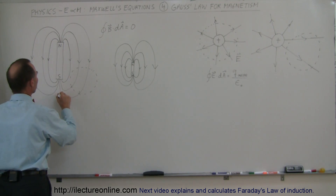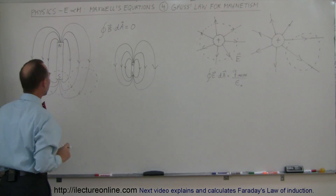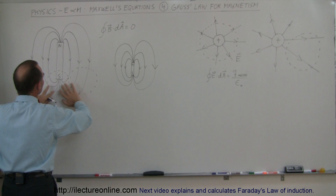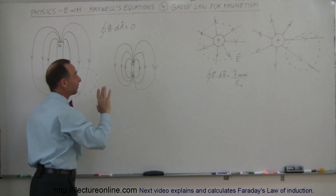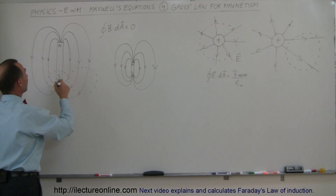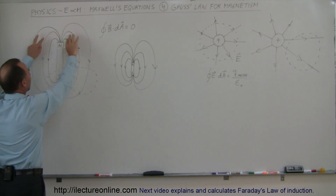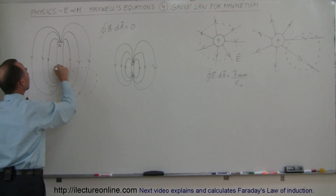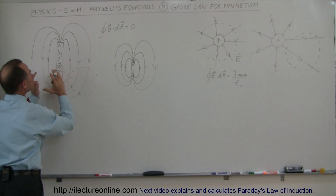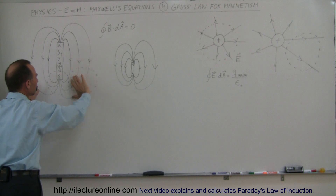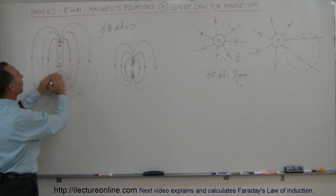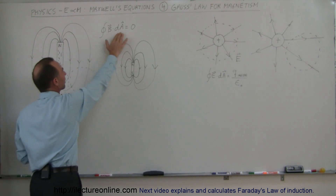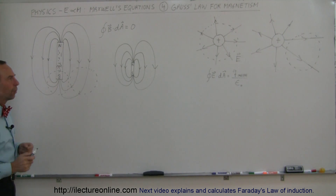But what if we draw a Gaussian surface around just one pole of a magnet? It might seem like there would be a net flux of magnetic field going into the surface with nothing coming out. However, even though the magnetic field emanates from the north pole and enters the south pole, it continues internally through the magnet from south back to north. So just as much field enters the south as leaves it, and you still get a zero surface integral.